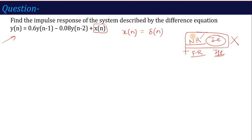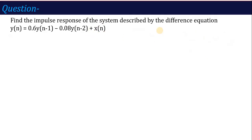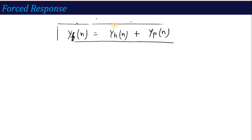That means the natural response component is complete, and what we have to calculate is the forced response. In this question, what you have to calculate is the forced response when the input X(N) is given as delta(N). If I talk about forced response, we have already read that forced response is given as homogeneous solution plus particular solution.